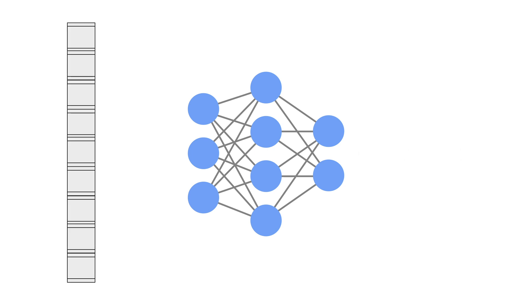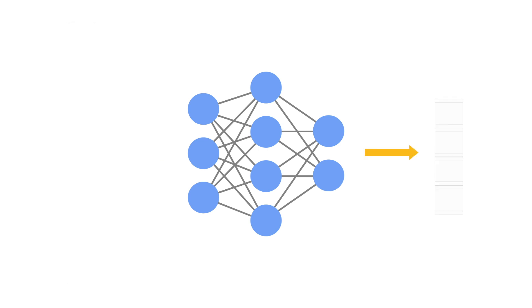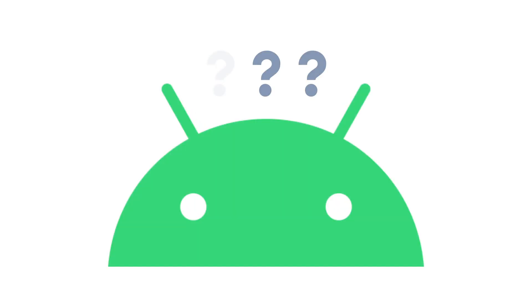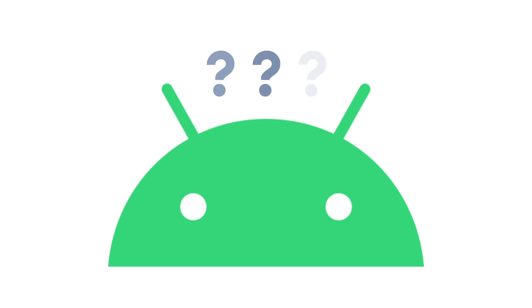But neural networks don't deal in strings like this. You have to format your string as a tensor, and this has a lot of complicated steps. And of course, when it gives you the reply, that's a tensor too, which leads to some complexity for you to handle. As somebody who's a mobile developer and not a data scientist, writing in Kotlin or Swift, how do you do all of this conversion and parsing?